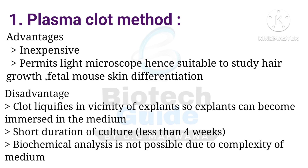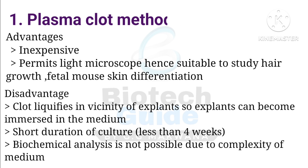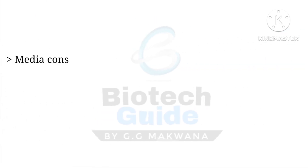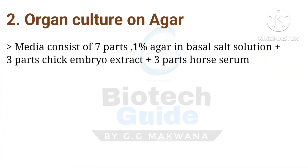For organ culture on agar, as the name suggests, agar is a media component. The media consists of seven parts: one part is one percent agar in basal salt solution, three parts chick embryo extract, and three parts horse serum — so we consider it as a 1:3:3 ratio.